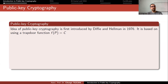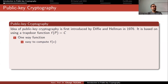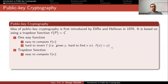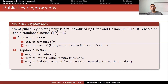It is based on using a trapdoor function f(p) = c. In one-way functions, given x it is easy to compute f(x) = y, but given y it is hard to find x — this is called pre-image resistance in hash functions. Public key cryptography uses a similar trapdoor function: it is easy to compute the output, hard to invert f without extra knowledge, but if you have the extra knowledge it is easy to find the inverse. That extra knowledge is called the trapdoor.